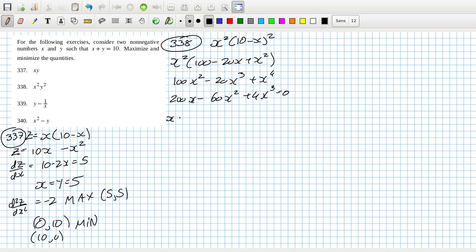So the derivative is 200x minus 60x squared plus 4x cubed equals 0. I can take out the x. And I'm left with 4x squared minus 60x plus 200.